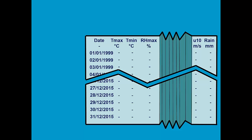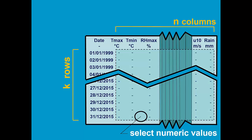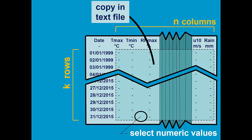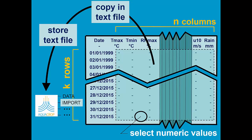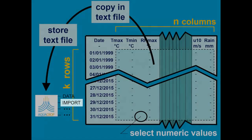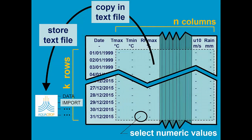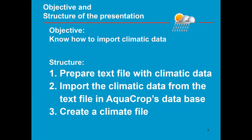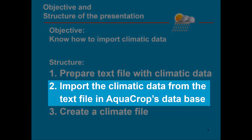To create a text file, we are going to select the numerical values in the spreadsheet. We copy them into a text file and we save that text file in the import directory of AquaCrop. In the next part, we are going to import the climatic data from that text file into AquaCrop's database.